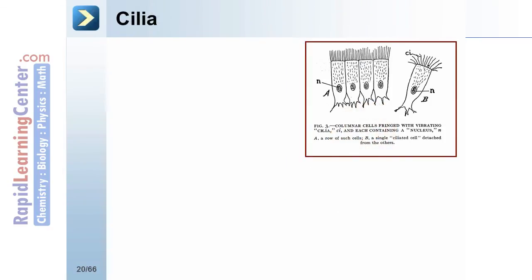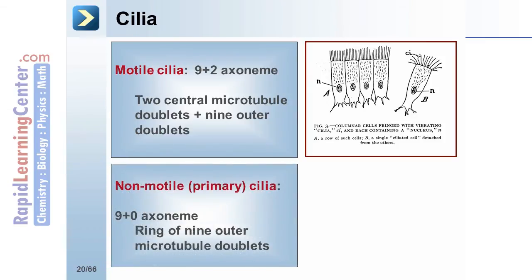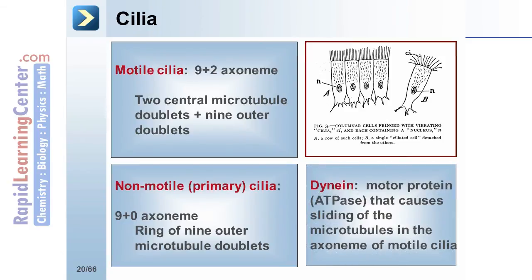While we're on the topic of microtubules, let's take a look at cilia. There are two types of cilia. Motile cilia are composed of two central microtubule doublets in addition to nine outer doublets, which is a 9+2 axoneme. Non-motile, or primary cilia, are composed of a ring of nine outer microtubule doublets, called a 9+0 axoneme. The motor protein dynein is an ATPase, and its motion causes the sliding of the microtubules in the axoneme of motile cilia, producing the bending movement needed for cilia to beat.